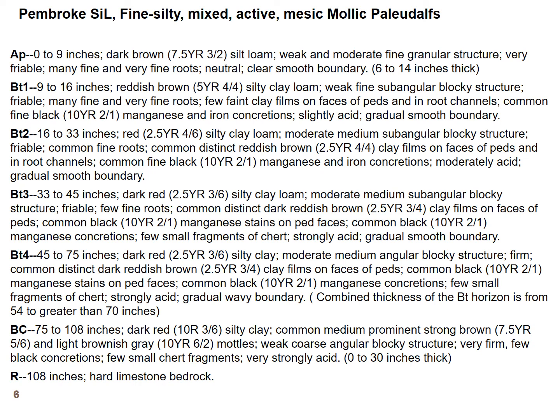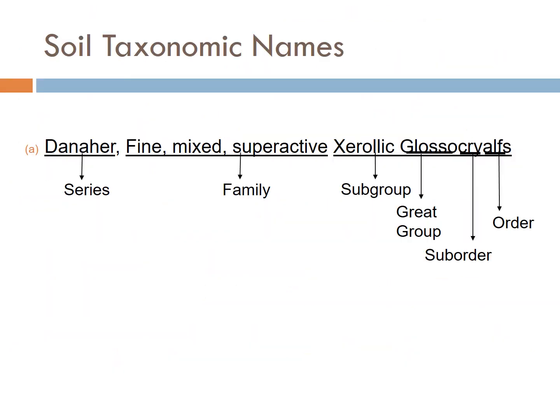The BC horizon is a transitional horizon that is both a horizon of accumulation and a horizon of parent material. In this instance, we have limestone bedrock at the base of the entire profile. If I give you a long taxonomic name like this on an exam, I would ask you to identify the order or underline the family — but I'm not going to expect you to know what 'fine mixed super active' or 'glossic' means. I'm not going to ask you to do those things.